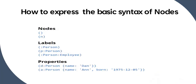Let's start with how to express the basic syntax of a node. In Neo4j, whatever is written in parentheses is denoted as a node. Whenever you create a node, you have to give it a label — without a label, you can't query that node, making it useless. As mentioned in the last video, each label can contain more than one node based on your requirement.